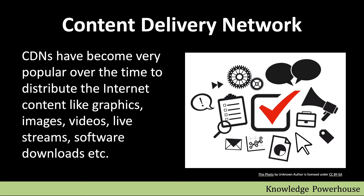Over time CDNs became quite popular, mainly used to distribute internet content like graphics, images, videos, live streams, and software downloads. For example, when you try to download software from a site, it asks which nearest server you want to use. That way it doesn't overload the source system — you go to the nearest location where a replica of that software exists and download it from there.